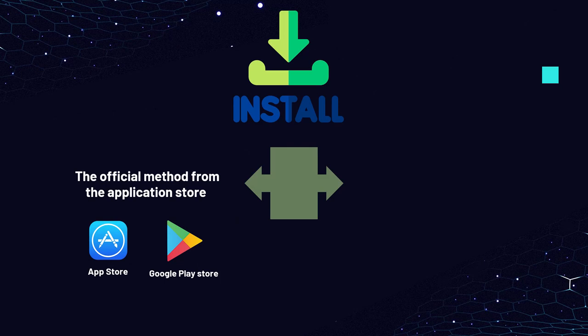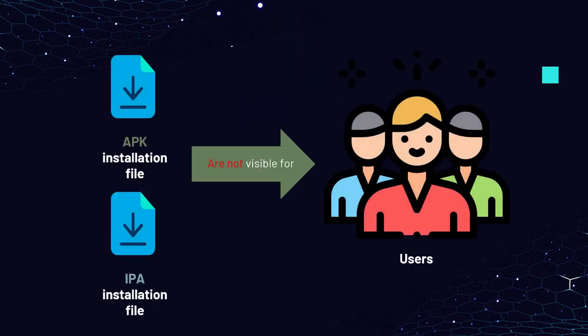There are at least two ways to install applications on a device. The first is the official method from the application store, such as the App Store for iOS devices and the Google Play Store for Android devices. This method is typically used when the application is already live and available on the application stores. The APK files for Android and the IPA files for iOS are not visible to the user.